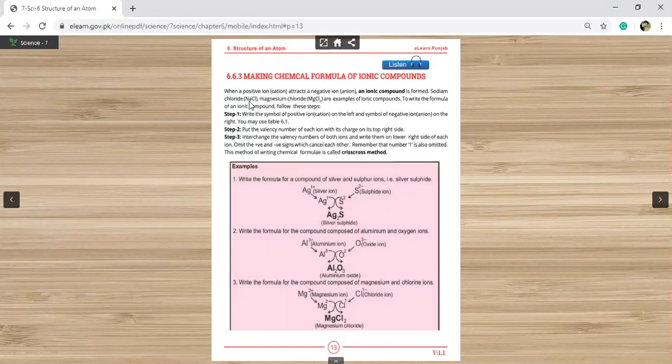In sodium chloride, Na is cation, Na is positive and Cl is negative. These are both ionic compounds. In the same way, MgCl2, Mg is positive and Cl2 is negative. Now we are going to write the right step. Write the symbol of positive ion on the left and the symbol of negative ion on the right.